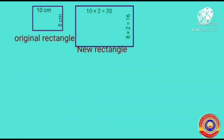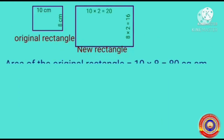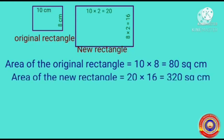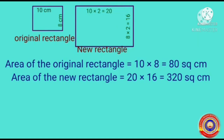Let's find out the area of the original rectangle and the area of the new rectangle. Area of the original rectangle equals 10 x 8, which is equal to 80 cm². Next, the area of the new rectangle equals 20 x 16, which is equal to 320 cm². In the new rectangle, both the length and width are doubled. The area of the original rectangle equals 80 cm² and the area of the new rectangle equals 320 cm².